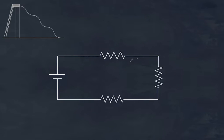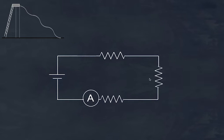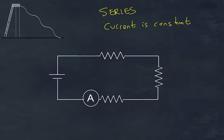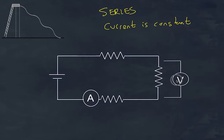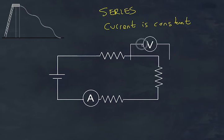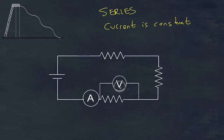Now let's look at the series circuit. We have a voltage supply and three resistors, which may not necessarily be the same value. If I place my ammeter here, or here, or here, or here — it doesn't matter. The current is constant. So the important rule for a series circuit: the current along the circuit is constant and does not change.